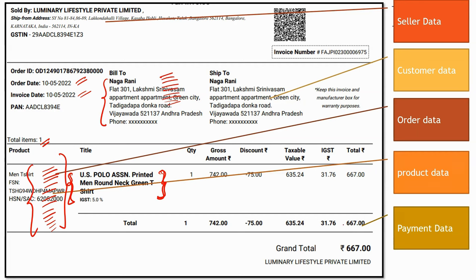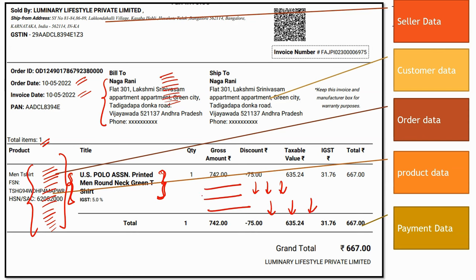Payment methods — there is UPI, credit card, and cash on delivery. Within UPI there are multiple options like PhonePe, Google Pay. Within credit card you have multiple cards — n number of payment methods. Seller data — is this the only seller? N number of sellers will be there on Amazon, n number of brands, n number of products will be sold.